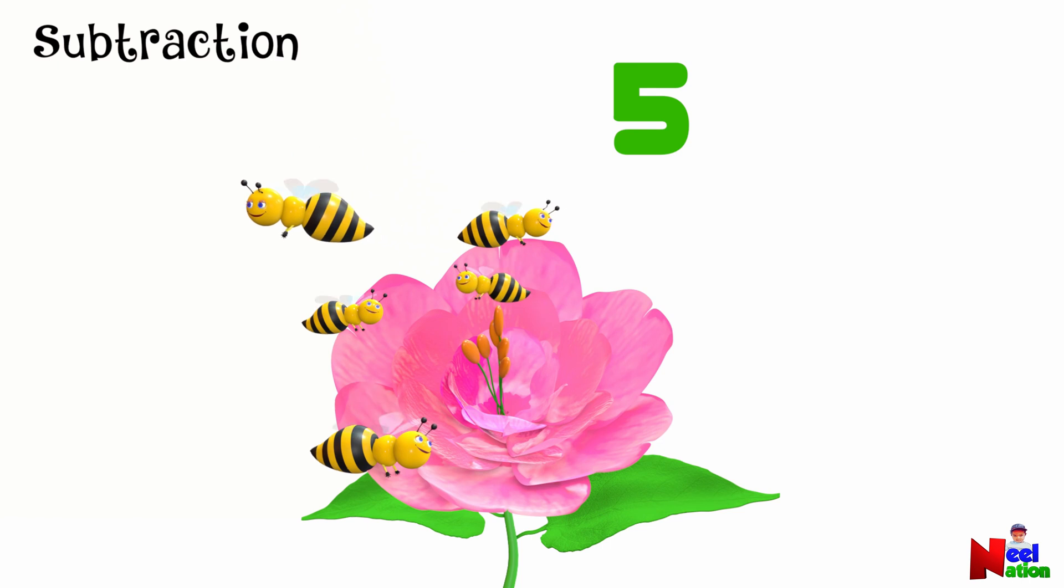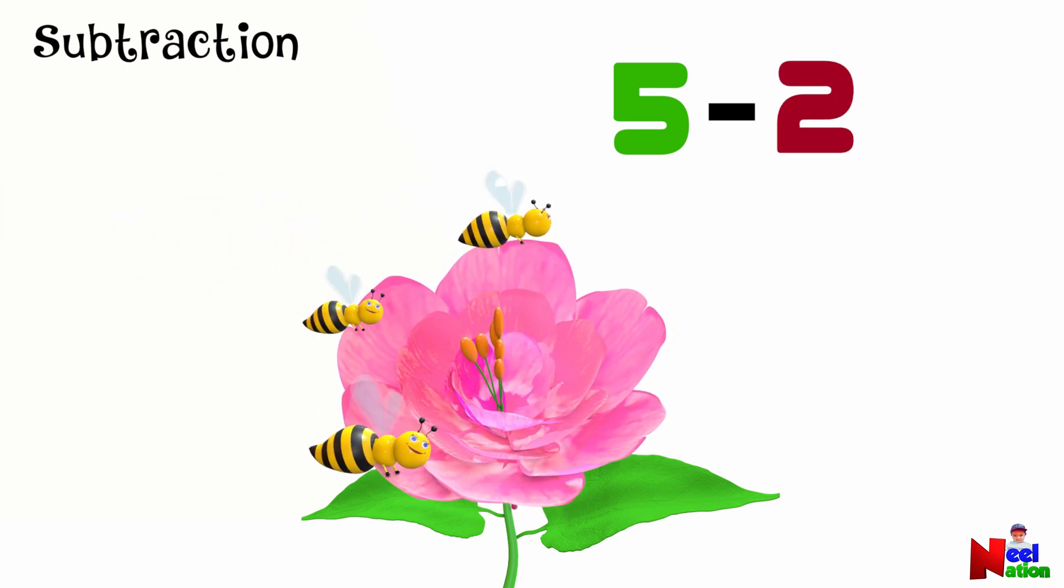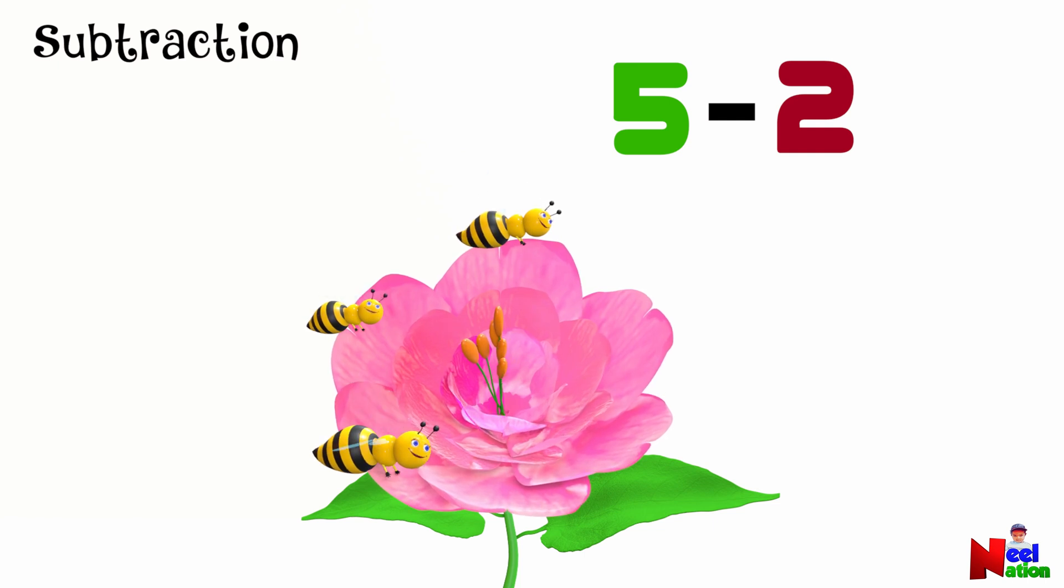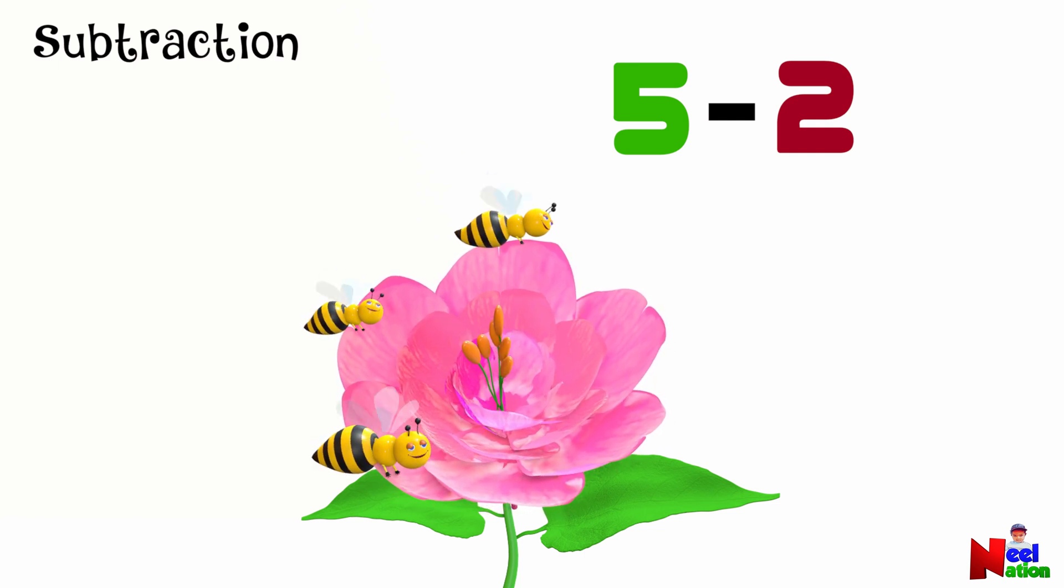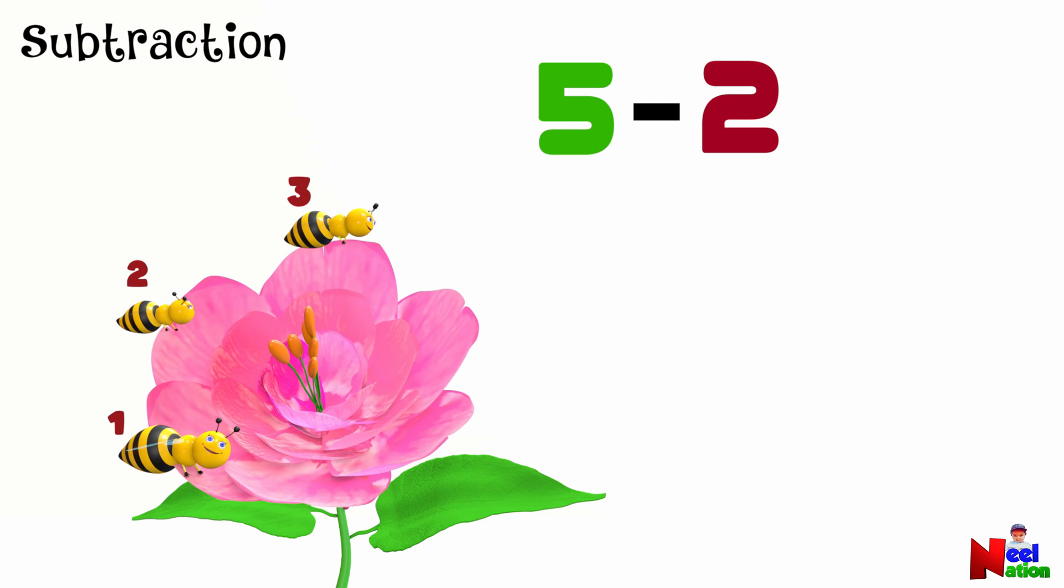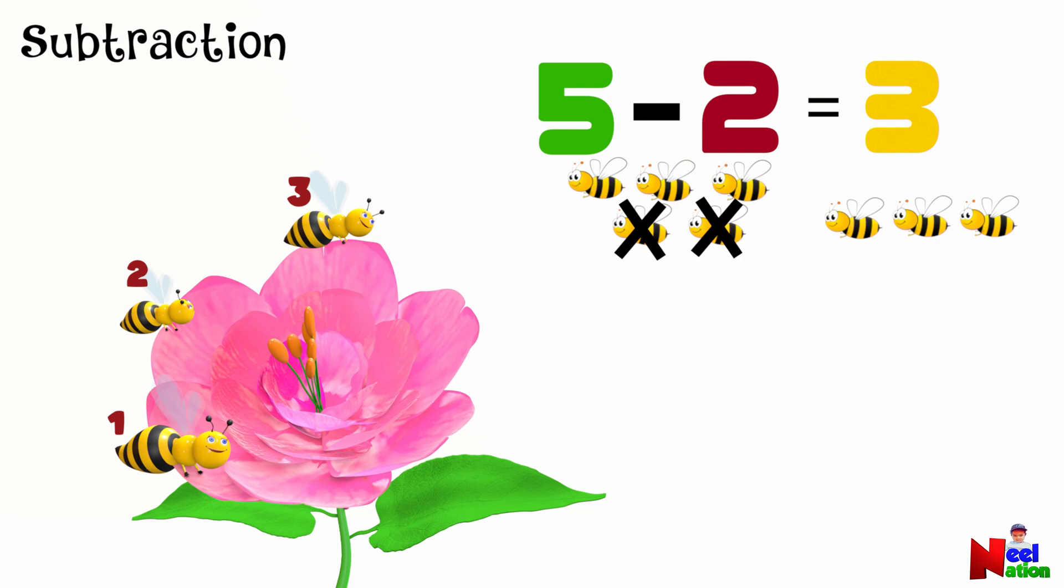Oh, no. After a while, two of the bees decide to fly away. Now, how many bees are left on the flower? Let's count again. One, two, and three. That's right. There are three bees still enjoying the flower. When two bees fly away from five, we are left with three. That's subtraction in action.